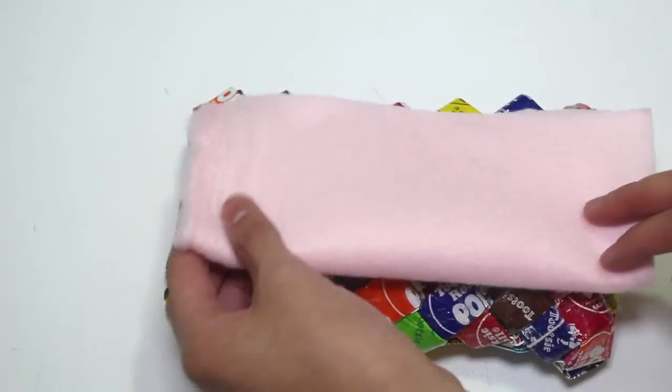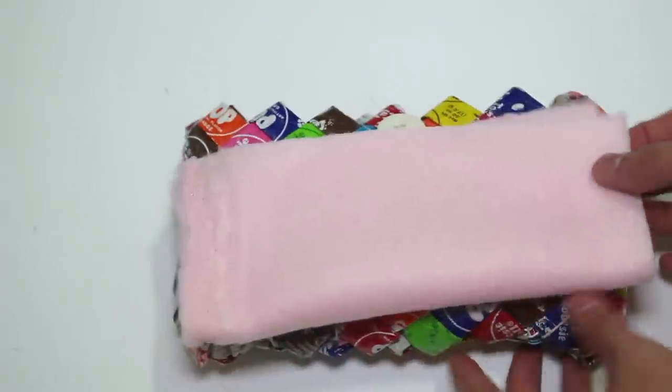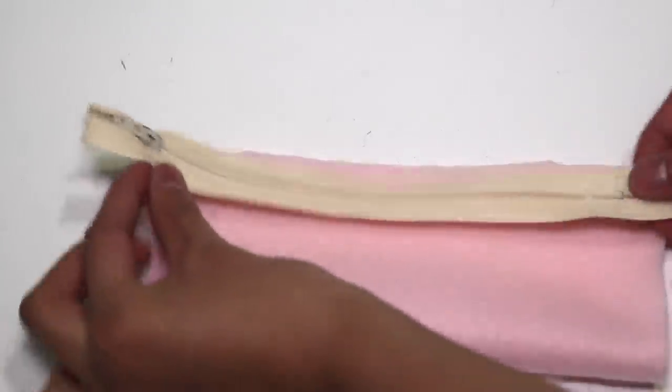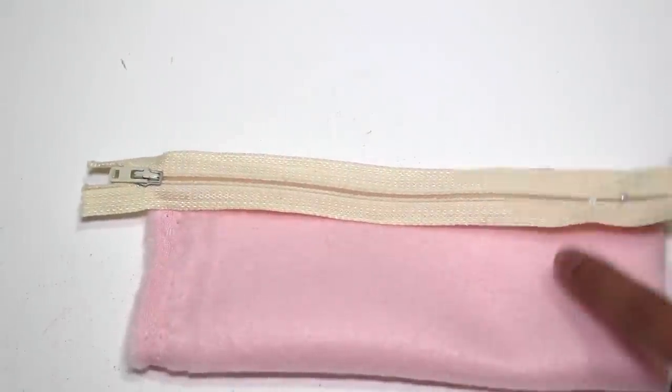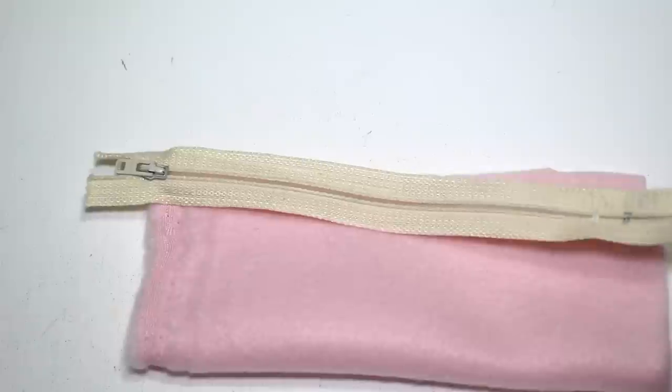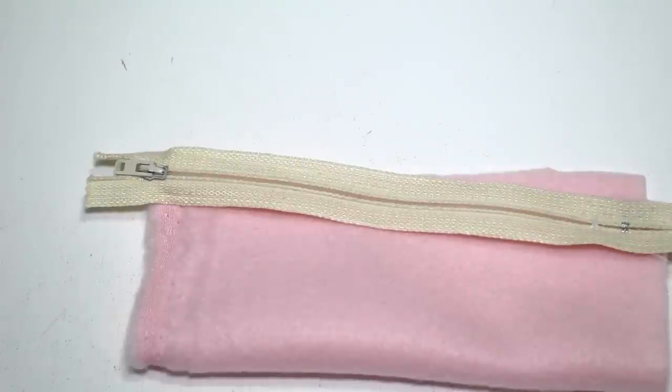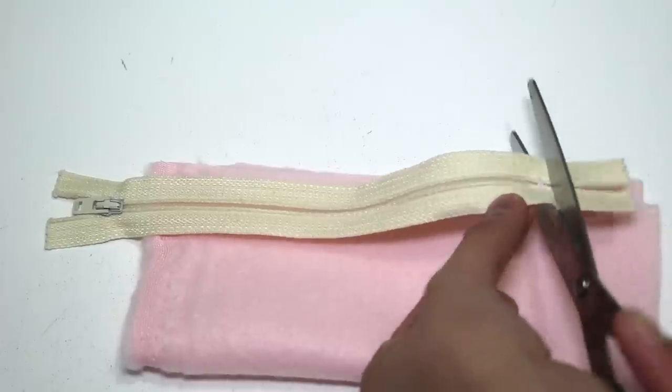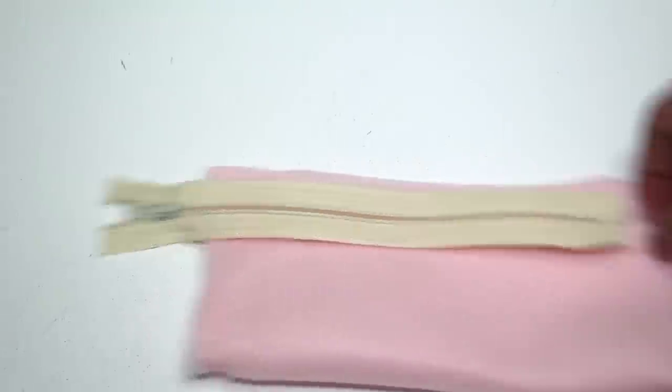To get an idea of how large the fabric should be, lay it on top of the purse and cut it down to a size where you can see all sides of the purse. The zipper is going to be sewn on first to the longest open side of the felt. Take the small needle and thread and sew the point on the zipper where it will be cut down to match the length of the felt. I'm using a sewing machine to connect the parts.